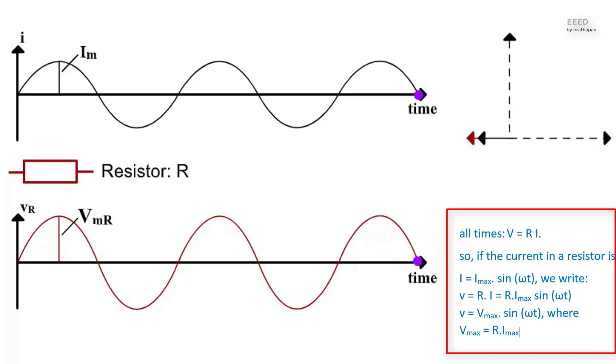So for a resistor, the peak value of voltage is R times the peak value of current. Further, they are in phase. When the current is a maximum, the voltage is also a maximum. Mathematically, phi equals zero.